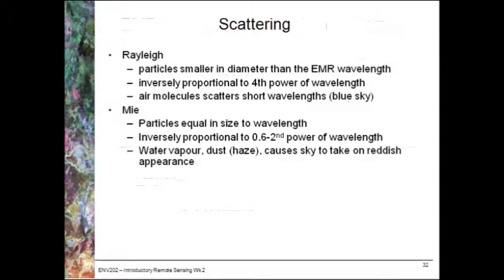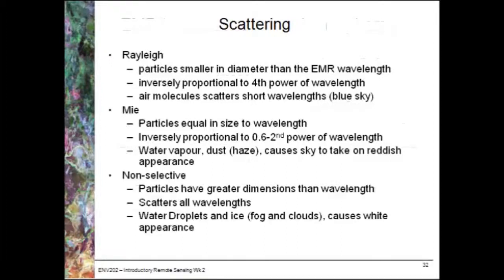Mie scattering is affected by larger particles in the atmosphere, usually things like water vapour and dust. This can cause the sky to take on a reddish appearance at sunset, for example.